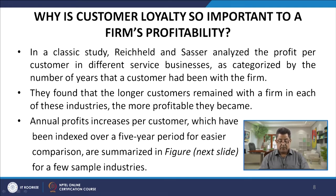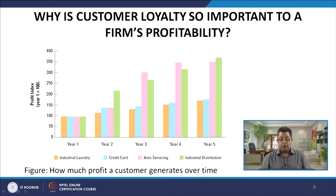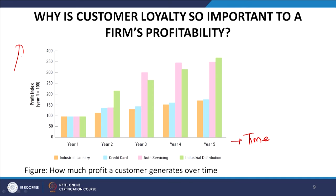Annual profit increase per customer indexed over a five-year period shows this for sample industries. On the x-axis is time and the y-axis is the profit index. Industrial laundry (yellow), credit card (blue), auto servicing (pink), and industrial distribution (green) all show steadily increasing profits from year 1 to year 5 — highest in credit card, followed by auto servicing.